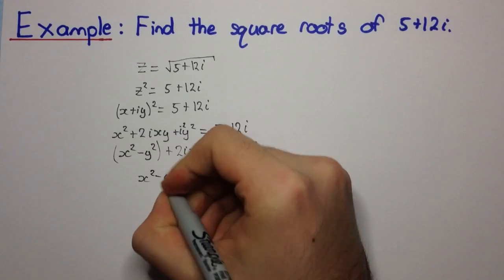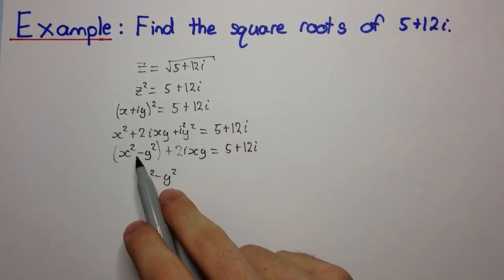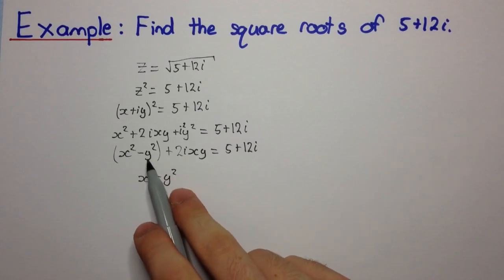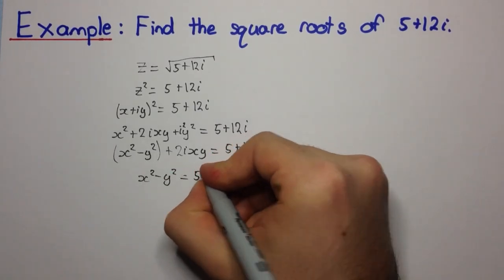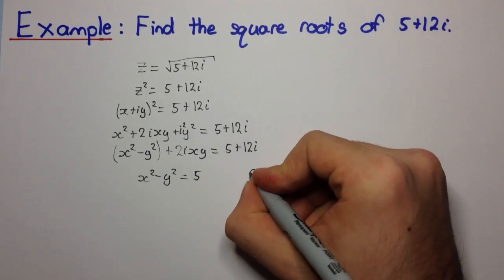The real part of z squared, which is x squared minus y squared, is equal to the real part of this complex number, which is 5, and let's call that equation 1.